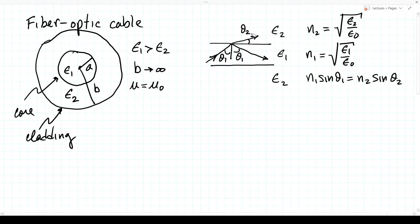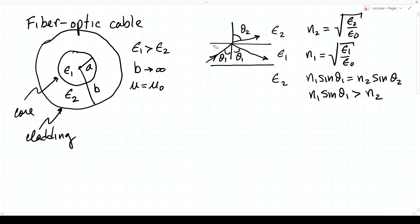Going to the extreme limit where theta 2 goes to 90 degrees, sine theta 2 equals 1, giving n1 sine theta 1 equals n2. If theta 1 gets even larger, n1 sine theta 1 is greater than n2 and there are no real solutions — no power propagates into the cladding, it all stays in the core. This is total internal reflection, and the wave bounces back and forth forever in the inner core.